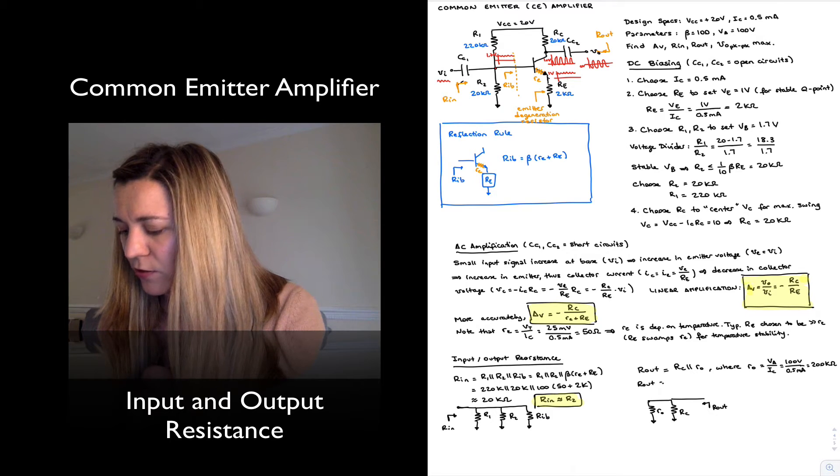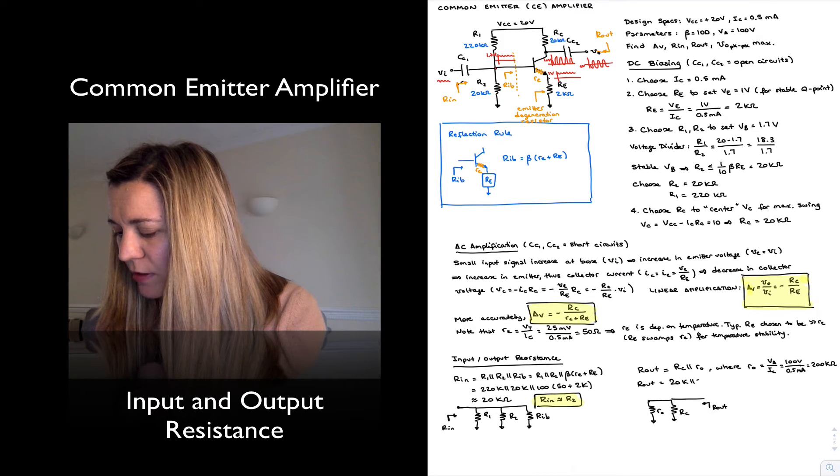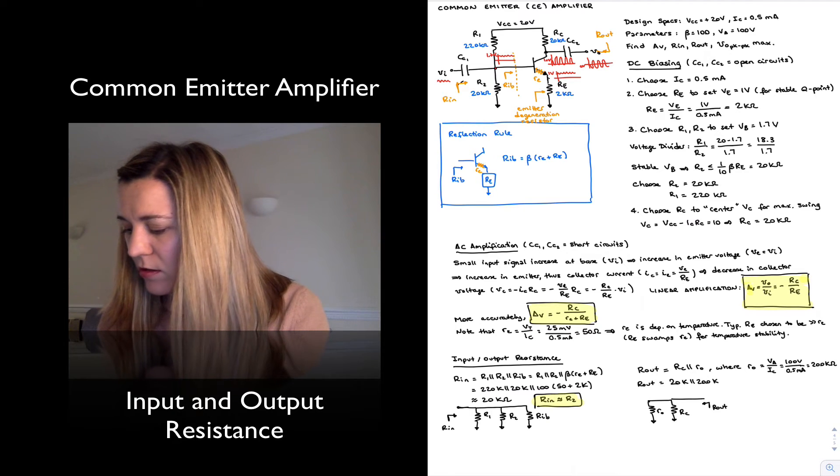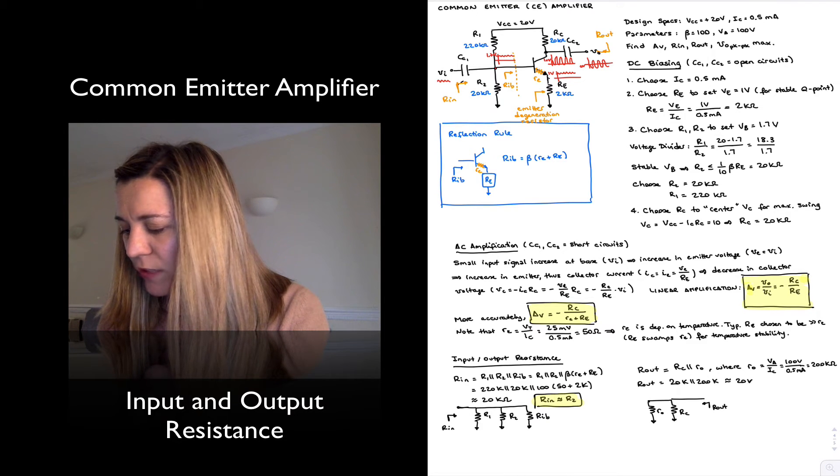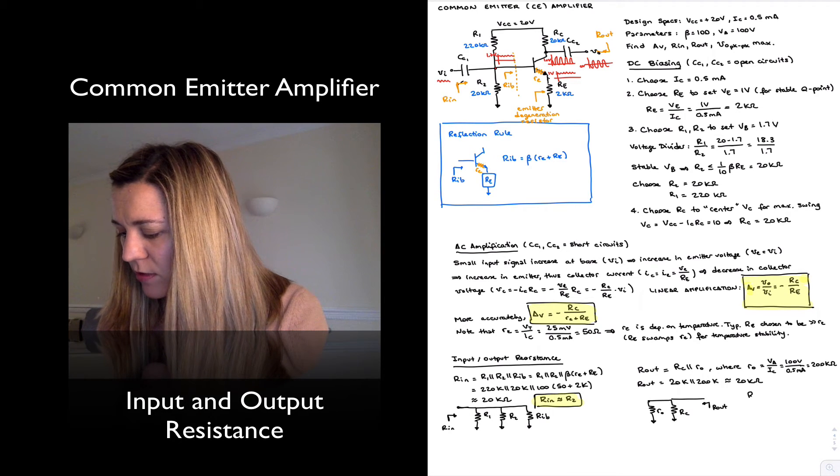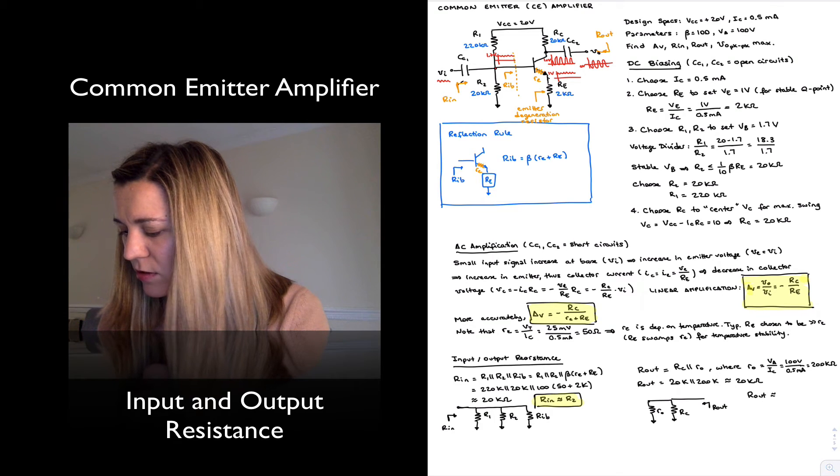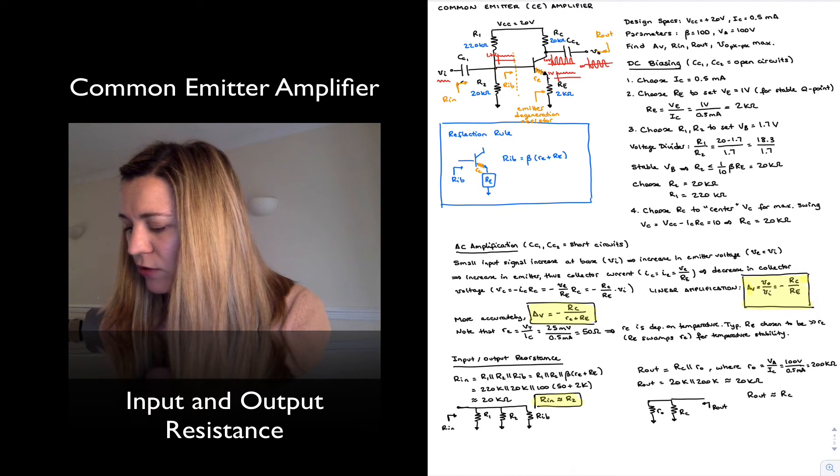So when I enter those values, I have 20 kilohms in parallel with 200k, which is approximately 20k, and so in this case, Rout is approximately equal to the collector resistor.